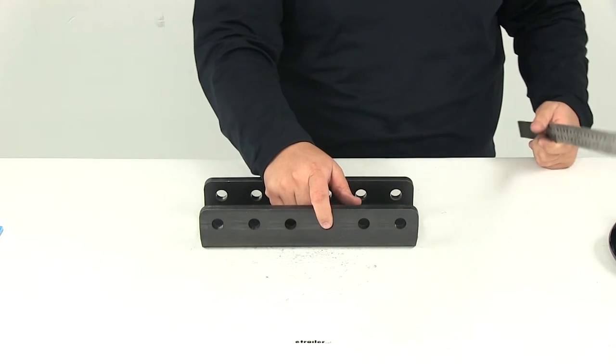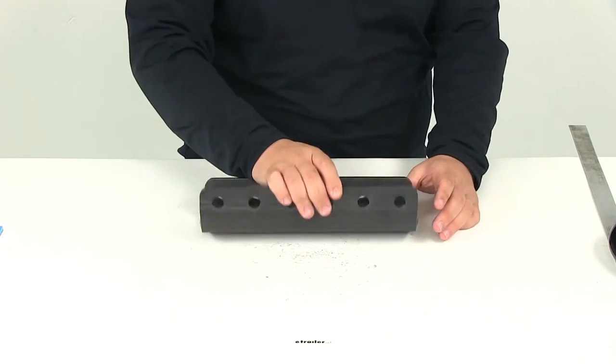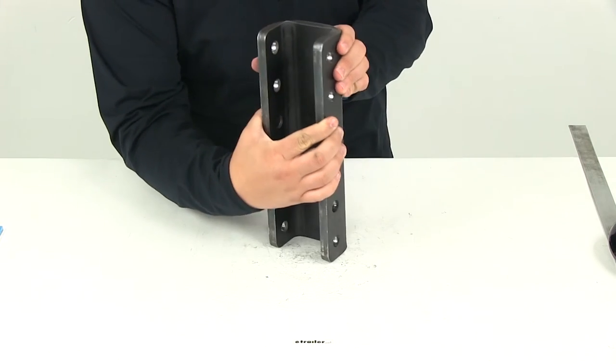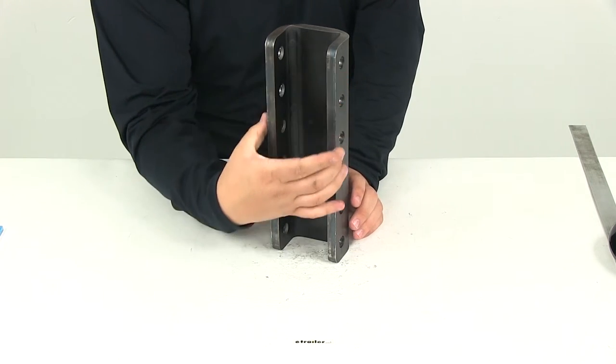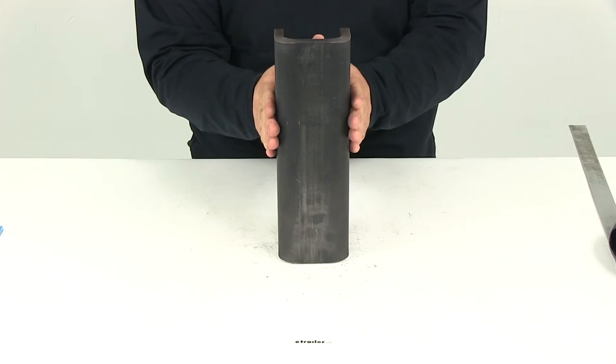The hole diameter is going to measure five-eighths of an inch, so it is designed to accept five-eighths inch diameter bolts. That overall width is going to apply to the back side too, about four inches.